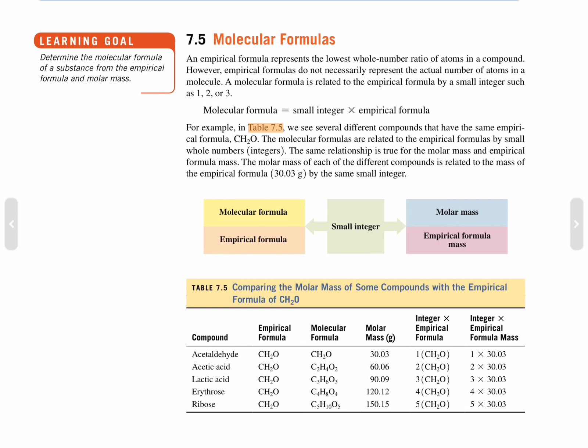For example, in Table 7.5 we have several different compounds that have the same empirical formula, CH2O. The molecular formulas are related to the empirical formulas by small whole number integers. The same relationship is true for the molar mass and the empirical formula mass. The molar mass of each of the different compounds is related to the mass of the empirical formula, 30.03 grams, by the same small integer.